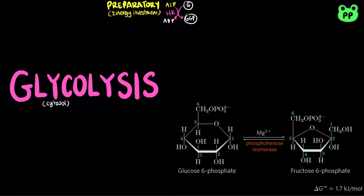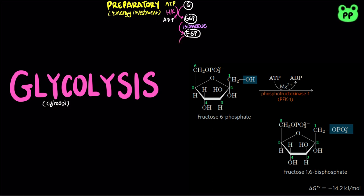Next, the enzyme phosphoglucose isomerase catalyzes the reversible isomerization of glucose-6-phosphate, which is an aldose, to fructose-6-phosphate, which is a ketose. Next, phosphofructose kinase-1, or PFK1, catalyzes the transfer of a phosphoryl group from ATP to fructose-6-phosphate, yielding fructose-1,6-bisphosphate.